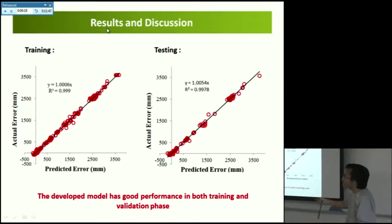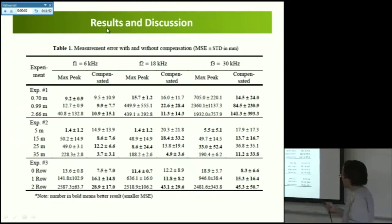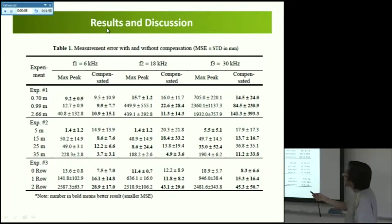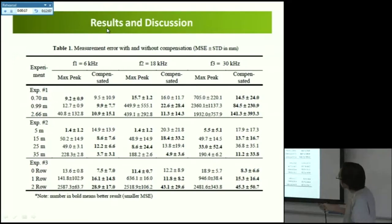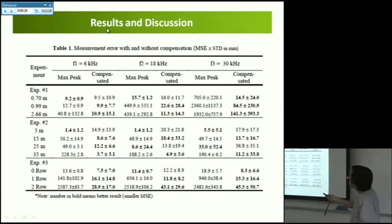After applying this model, we perform the compensation. This shows all the experiments we did: this is the error obtained using the maximum peak detection method, and this is the result obtained using the compensation method. You can see here that in many cases the compensation method performs very well and generates less error than the current maximum peak detection method.